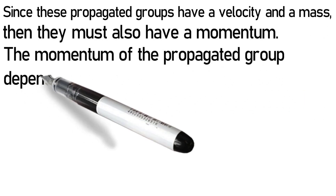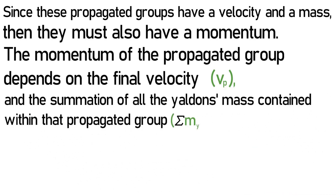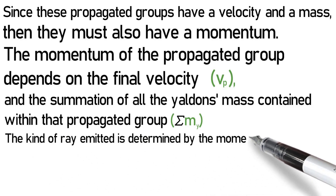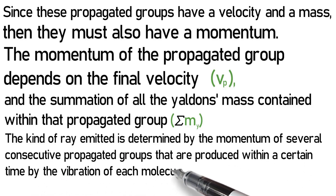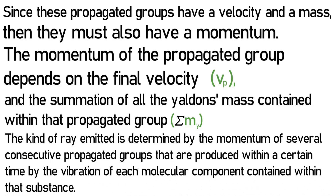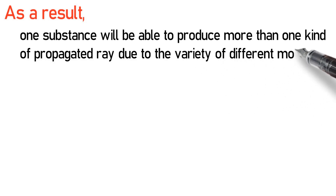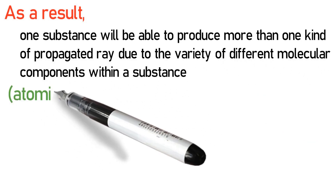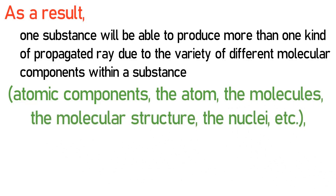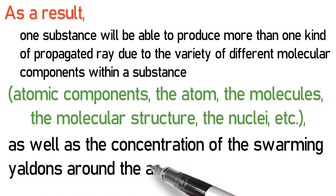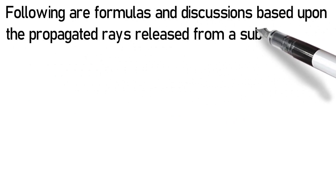The momentum of the propagated group depends on the final velocity, Vp, and the summation of all the Yaldins' mass contained within that propagated group. The kind of ray emitted is determined by the momentum of several consecutive propagated groups produced within a certain time by the vibration of each molecular component. As a result, one substance will be able to produce more than one kind of propagated ray due to the variety of different molecular components — atomic components, the atom, the molecules, the molecular structure, the nuclei, etc. — as well as the concentration of the swarming Yaldins around the atoms and molecules.